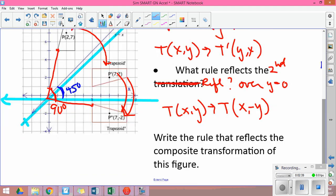And we can see when we put these together, the rule that reflects the composite transformation, well, the composite transformation is a rotation. We can see that, in fact, in this case, it's a clockwise 90 rotation.